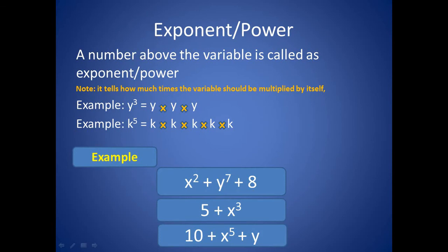Exponent, which is also called as power — a number which comes above the variable is called an exponent or power. An exponent tells how many times the variable should be multiplied by itself. For example, y to the power 3 equals y × y × y, and k to the power 5 equals k × k × k × k × k.